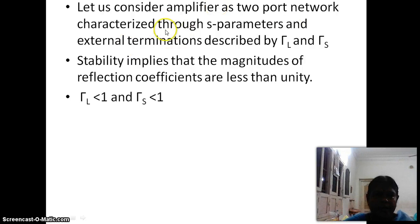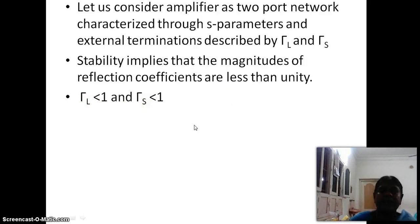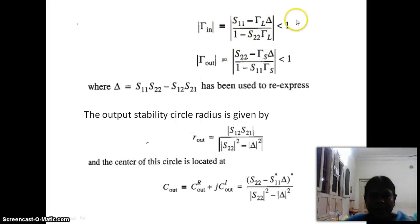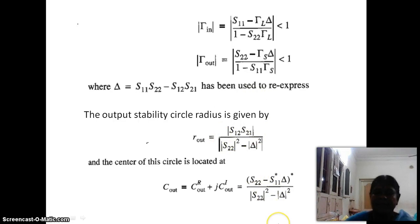Considering the amplifier as a two-port network characterized through S parameters and external terminations gamma_L and gamma_S, stability implies the magnitudes of all reflection coefficients are less than unity. The conditions for stability are |gamma_L| < 1 and |gamma_S| < 1. The expression for gamma_in involves delta, where delta = S11*S22 - S12*S21. The output stability circle radius and center are given by their respective expressions, as are the input stability circle radius and center.